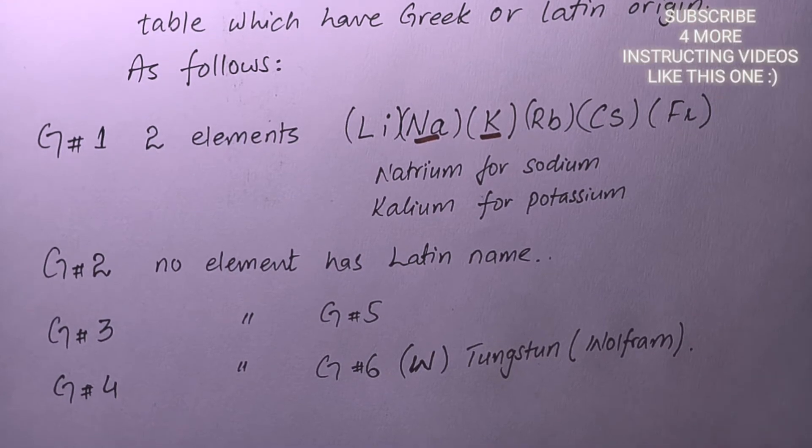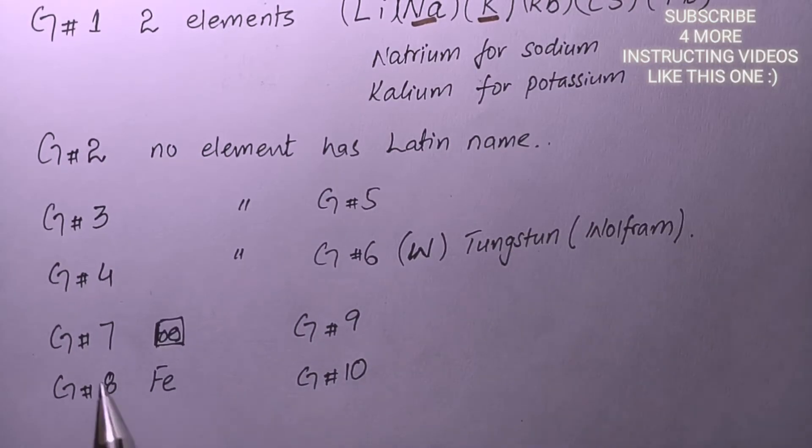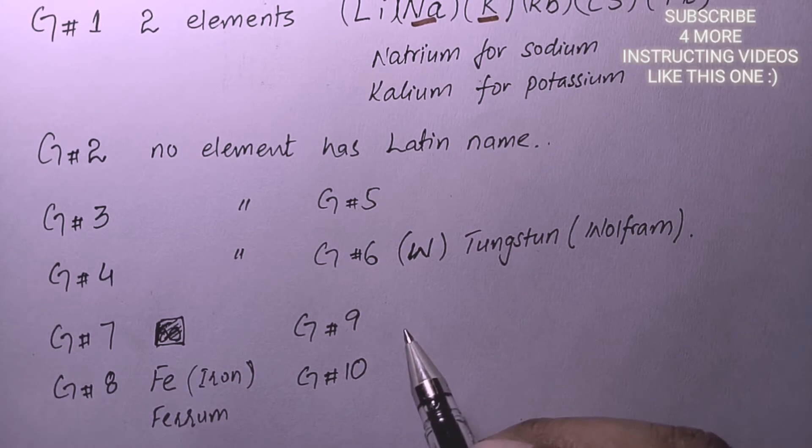In group 7, we don't have any element with Latin or Greek name. But in group 8 we have iron. Its symbol is Fe, so we have a Latin name for it that is Ferrum, as you have seen in the thumbnail of this video.